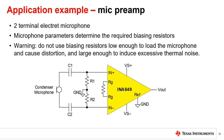For a typical two-terminal electret microphone with a DC component to bias the internal JFET, an instrumentation amplifier can be used to amplify the differential voltage. The microphone parameters determine the required biasing resistors. For a microphone with an output impedance of 2.2 kilohms, do not use biasing resistors low enough to load the microphone and cause distortion, or large enough to induce excessive thermal noise. This trade-off must be evaluated based on system requirements. After the biasing resistors are selected, the coupling capacitors can be calculated based on the frequency band required to pass.